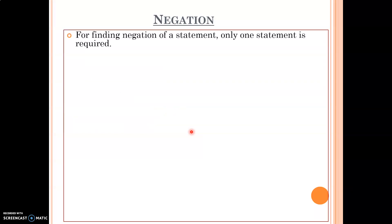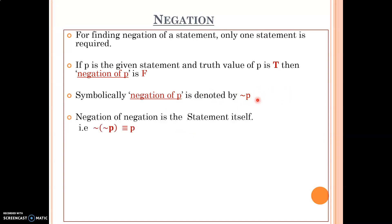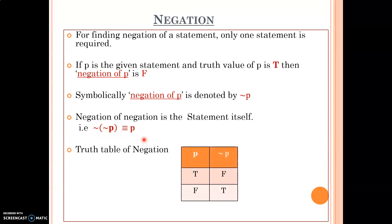Next: negation. For finding the negation of a statement, only one statement is required. If the truth value of statement P is true, then the negation of P is false; if P is false, then the negation is true. Symbolically, the negation of P is denoted by ¬P. The negation of negation of P is the statement itself — that is, ¬(¬P) = P. The truth table for negation has only two columns: if P is true then ¬P is false, and if P is false then ¬P is true.